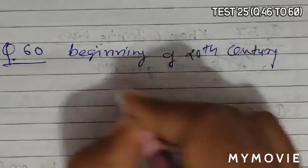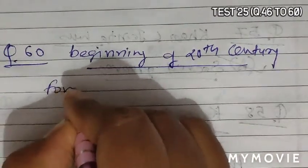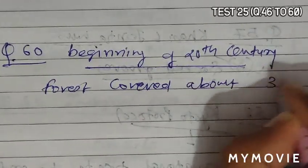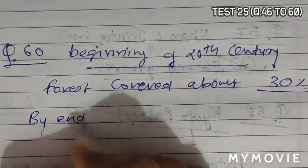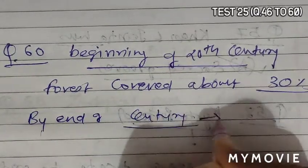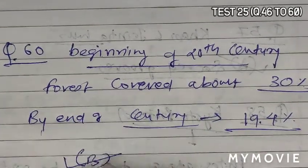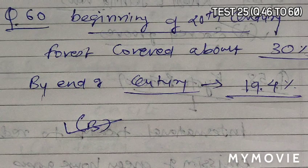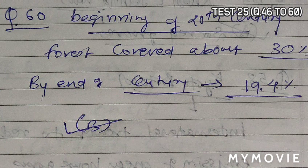Question 60 asks that at the beginning of the 20th century, forests covered about 30% of land of India. By end of century it shrunk to 19.4%. So according to this, option B becomes the correct answer.